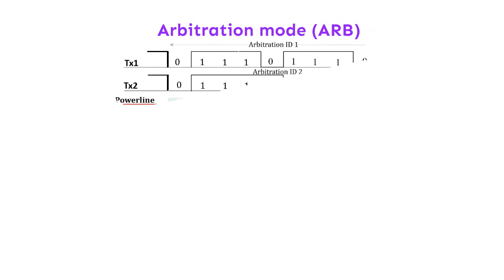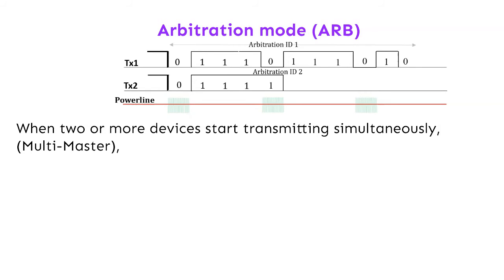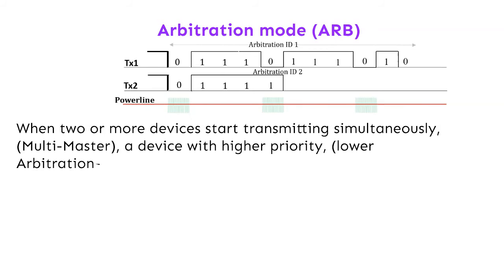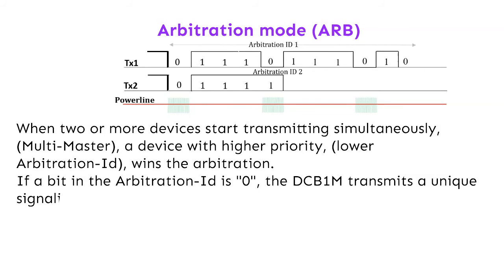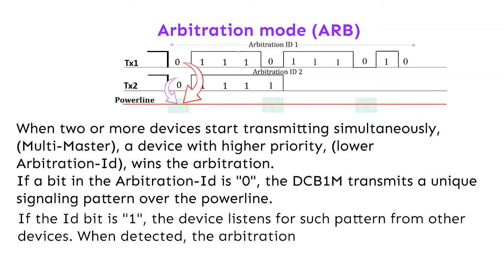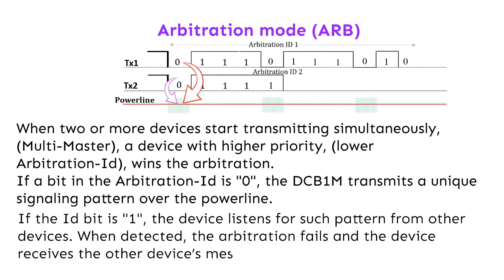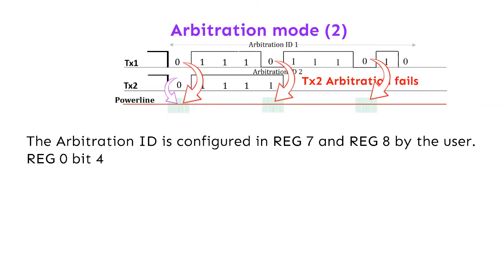Arbitration mode: when 2 or more devices start transmitting simultaneously (multi-master), a device with higher priority — lower ID — wins the arbitration. If a bit in the arbitration ID is 0, the DCB1M transmits a unique signaling pattern over the powerline. If the ID bit is 1, the device listens for such a pattern from other devices. When detected, the arbitration fails and the device receives the other device's message. The arbitration ID is configured in Reg 7 and Reg 8 by the user. Reg 0 bit 4 set to 1 enables arbitration mode; default is 0.